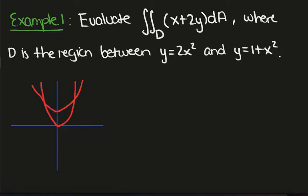Okay, so of course we're looking at this region here, so we need to calculate these intersection points. That's given by setting the two parabolas equal to each other. If we take x squared over here, we get x squared is equal to 1, so x is plus or minus 1.